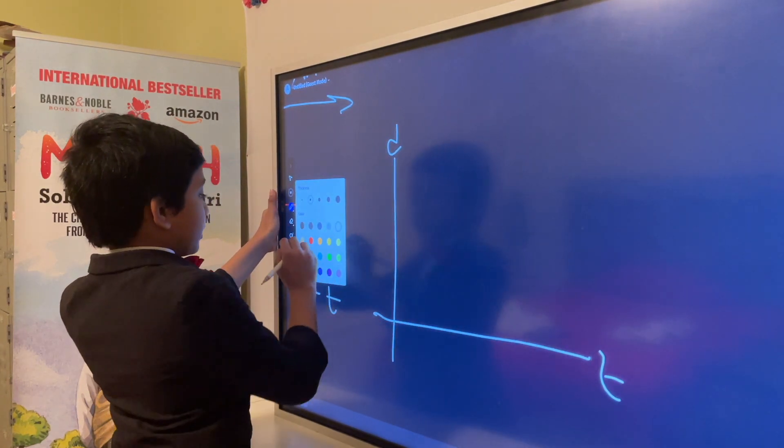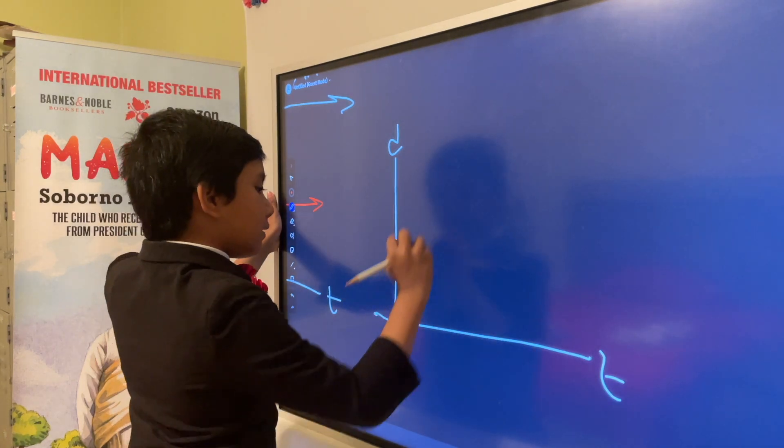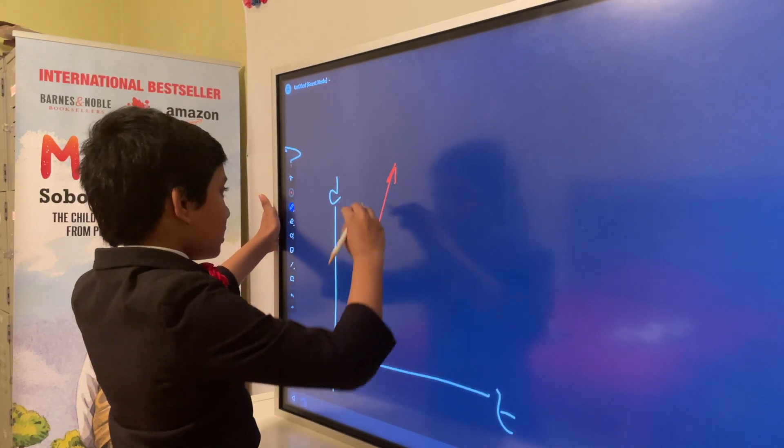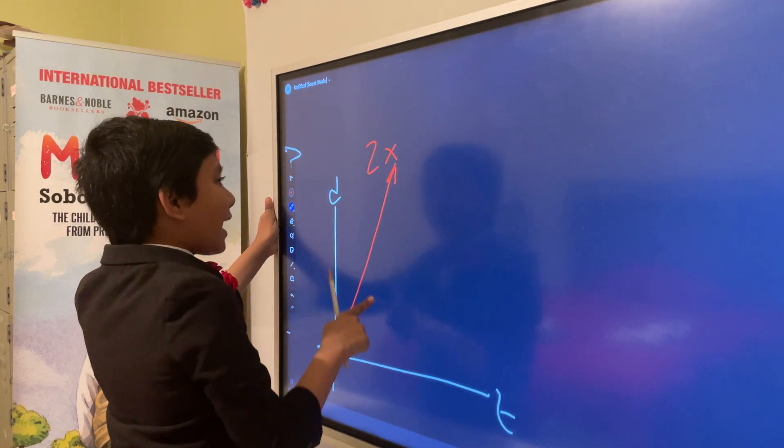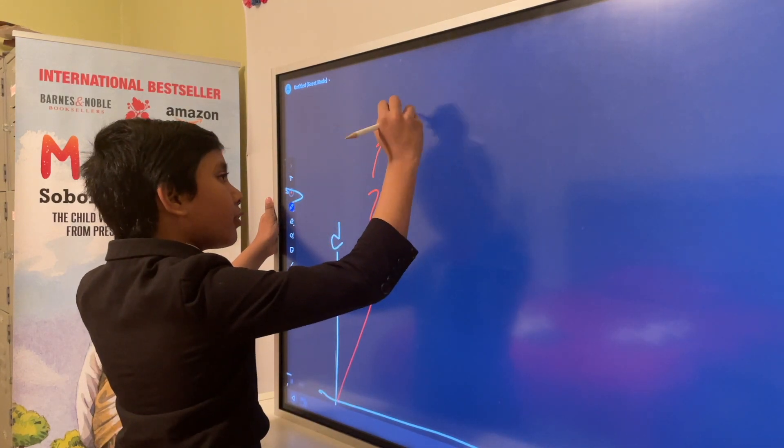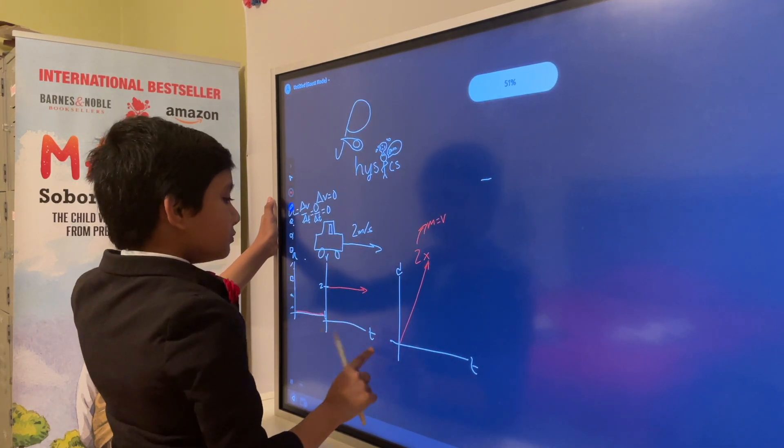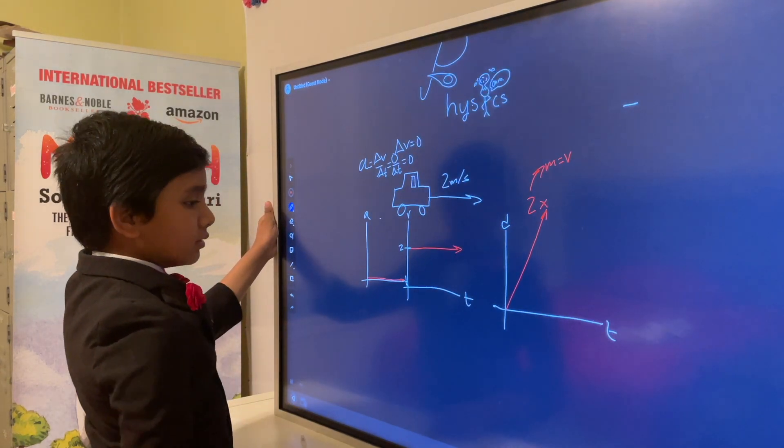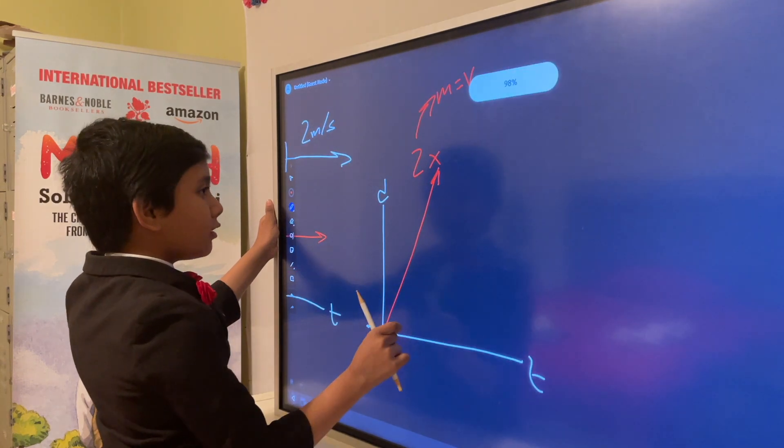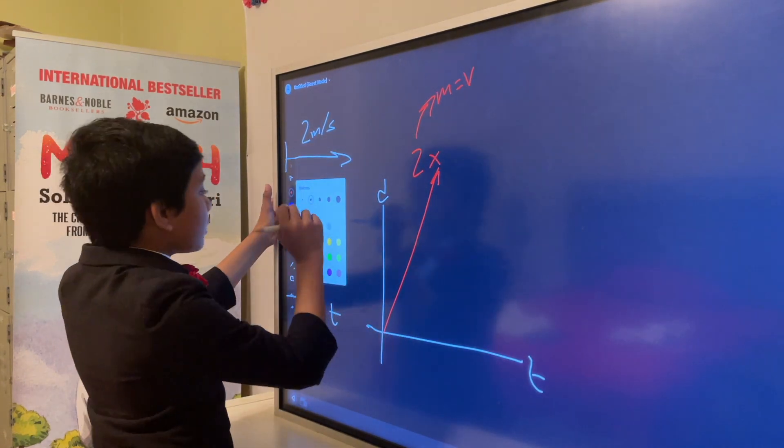And finally, for the distance, it's even more interesting than that. The graph would be 2x, where the slope represents the velocity. This is because distance increases over time at a constant rate.